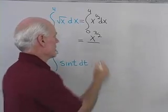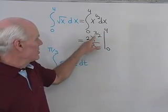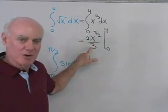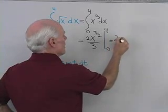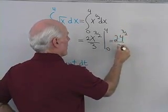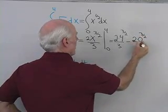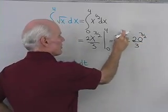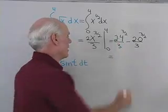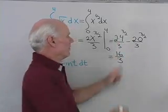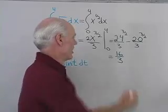Dividing by 3/2 is the same as multiplying by 2/3, so I'll write this as 2/3 · x to the 3/2, evaluated from 0 to 4. So now I need to evaluate at 4: I have 2 times 4 to the 3/2, all divided by 3, minus 2 times 0 to the 3/2, all divided by 3. For 4 to the 3/2: I take the square root of 4, that's 2, cube it, that's 8, times 2 is 16, divided by 3. The second term is 0. So my answer is 16/3.